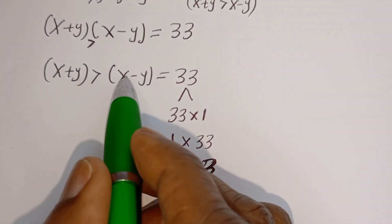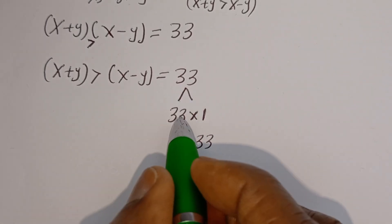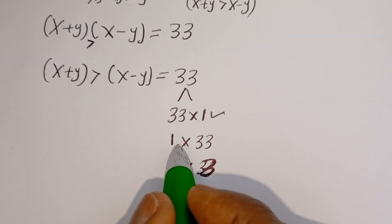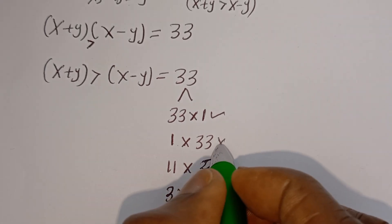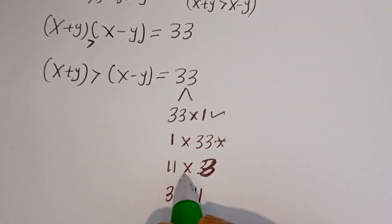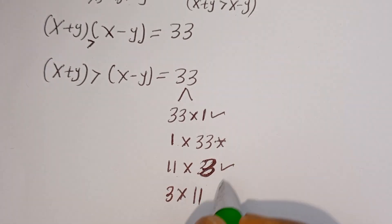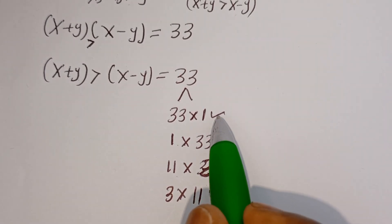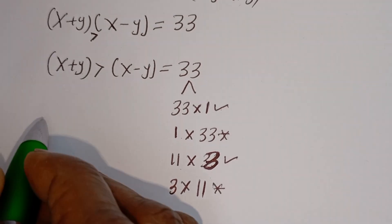Since we said X plus Y is greater than X minus Y: 33 is greater than 1 — this is accepted. 1 is less than 33 — this is rejected. 11 is greater than 3 — this is accepted. 3 is less than 11 — this is rejected. So we have two valid cases.